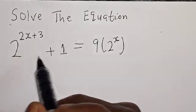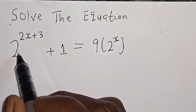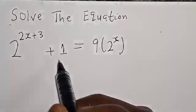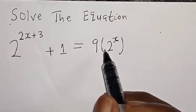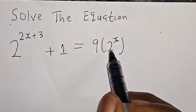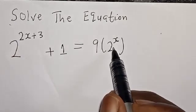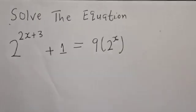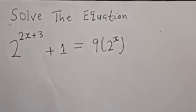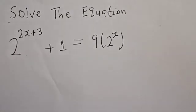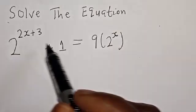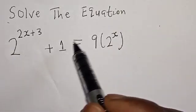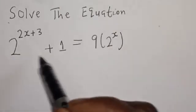Solve the equation: 2 raised to power 2s plus 3, plus 1, is equal to 9 multiplied by 2 raised to power s. Hi everyone, welcome to my class, the Olusta class, where we teach mathematics and statistics. In today's class, we quickly want to find the value of s from this given exponential equation.